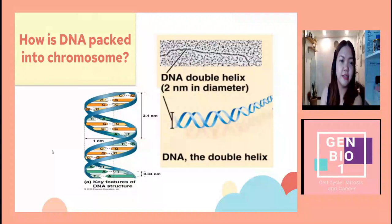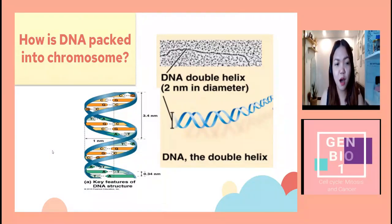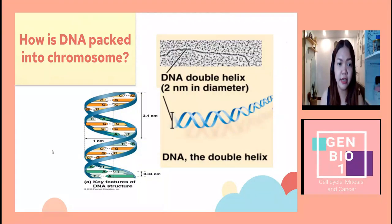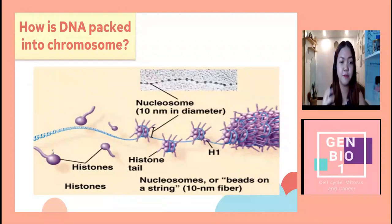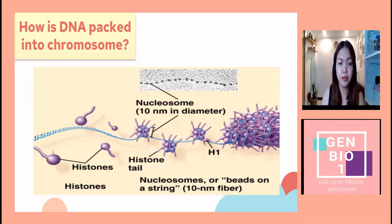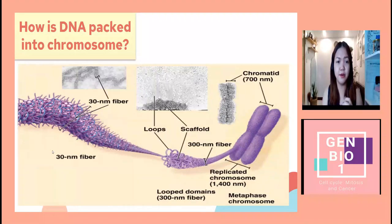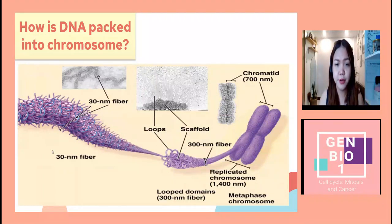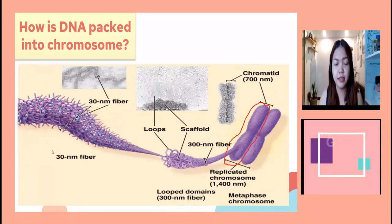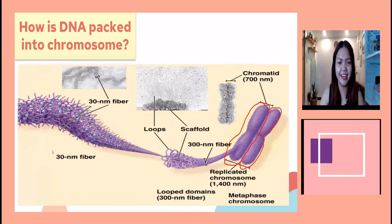How is DNA packed into a chromosome? Your DNA, composed of nitrogenous bases G, C, A, and T, will coil and wrap around histones — a type of protein — to form your nucleosome. This nucleosome will further coil together, developing loops and scaffold, until it reaches the form of a chromatid. If it undergoes replication, it will become sister chromatids — sisters because there are two of them.